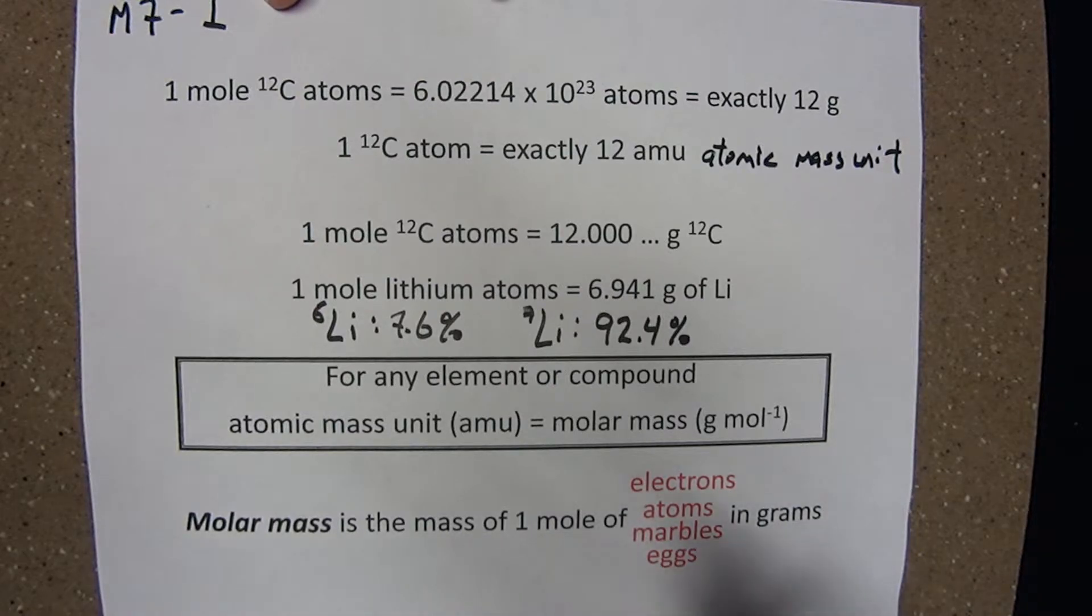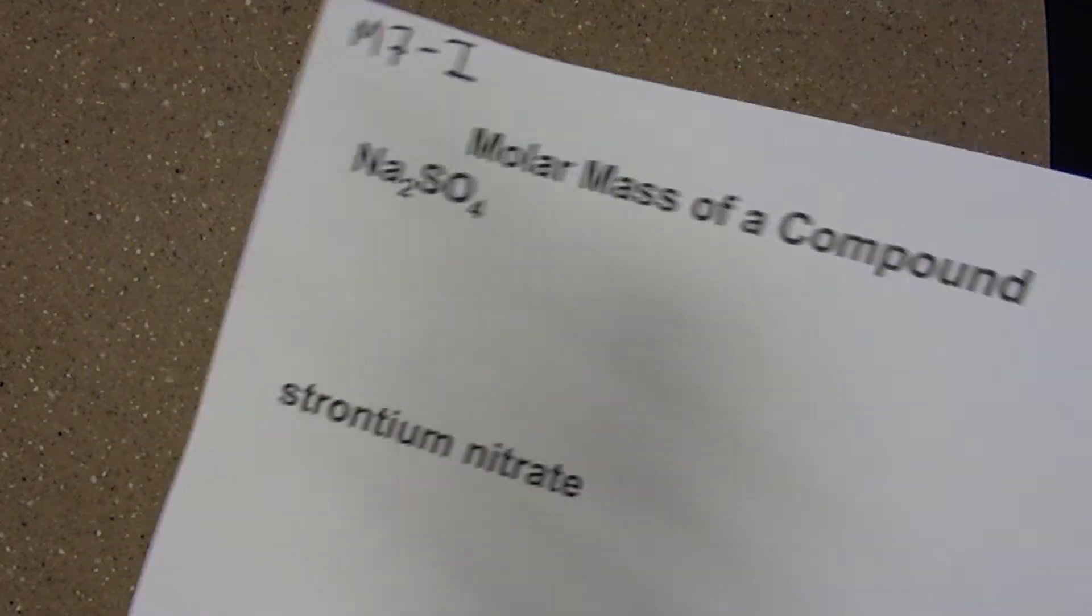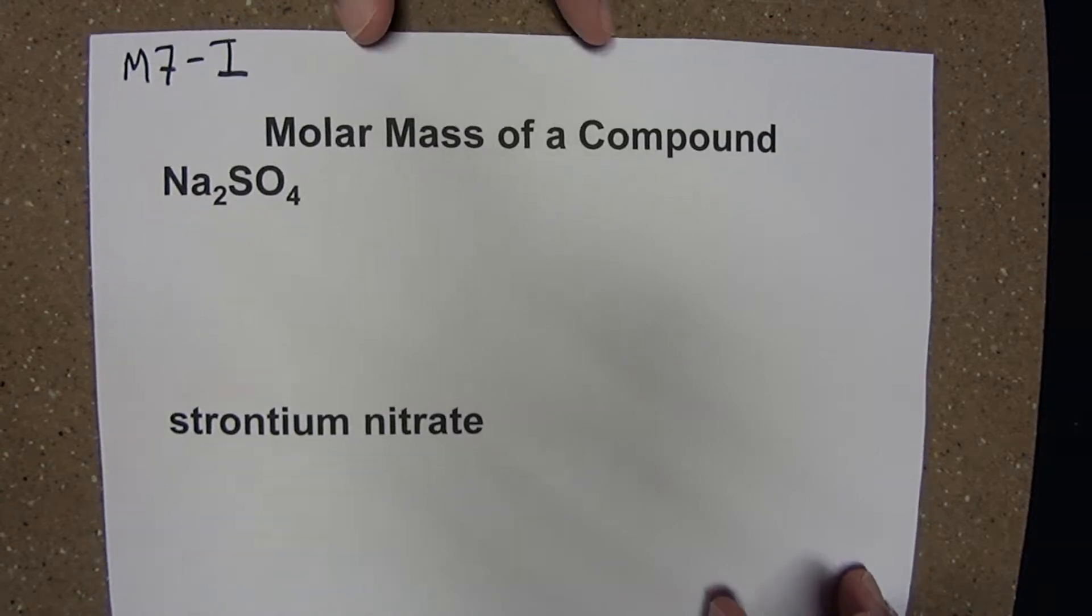We will work primarily with molar masses in grams per mole. So, a molar mass is the mass of one mole of whatever it is, electrons, atoms, marbles, eggs. We'll work primarily with substances here, pure substances, either elements or compounds. Let's look at how we calculate molar mass of a compound.